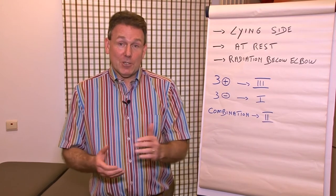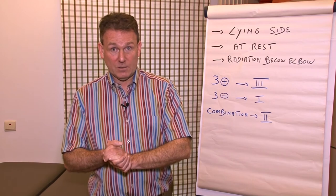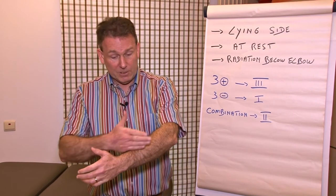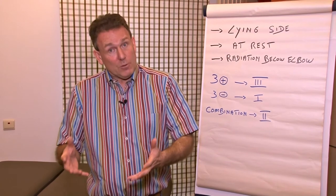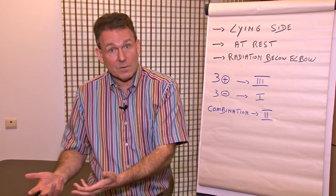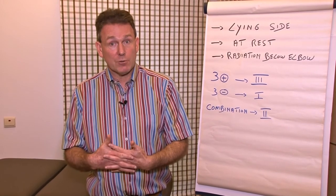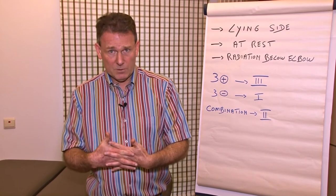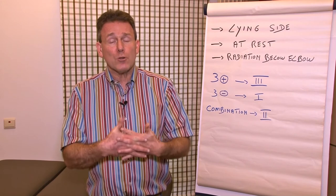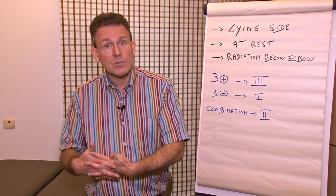The other situation: if the patient says they have pain at rest, cannot lie on that side, and there is a lot of radiation of pain — in combination again with the capsular pattern and the muscle spasm end feel — then this is an arthritis heavy, an arthritis stage three. This is very important because the treatment strategy of an arthritis type one is totally different than the treatment strategy for an arthritis type three.